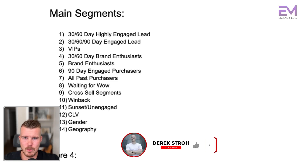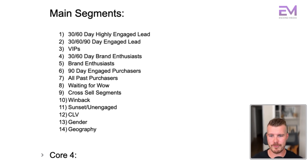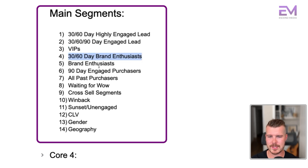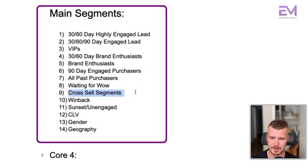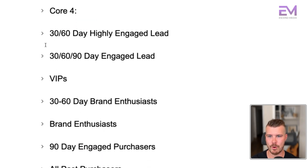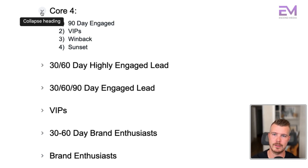So the main segments we're looking at — and don't get overwhelmed because I'll give you the core four right below — are: a 30 to 60 day highly engaged lead, a 30, 60, or 90 day engaged lead, VIPs, 30 to 60 day brand enthusiasts, brand enthusiasts, 90 day engaged purchasers, all past purchasers, waiting for wow, cross sell segments, win back, sunset or unengaged segment, customer lifetime value, gender and geography. The four core segments to start with are the 90 day engaged, VIPs, win backs, and sunset.